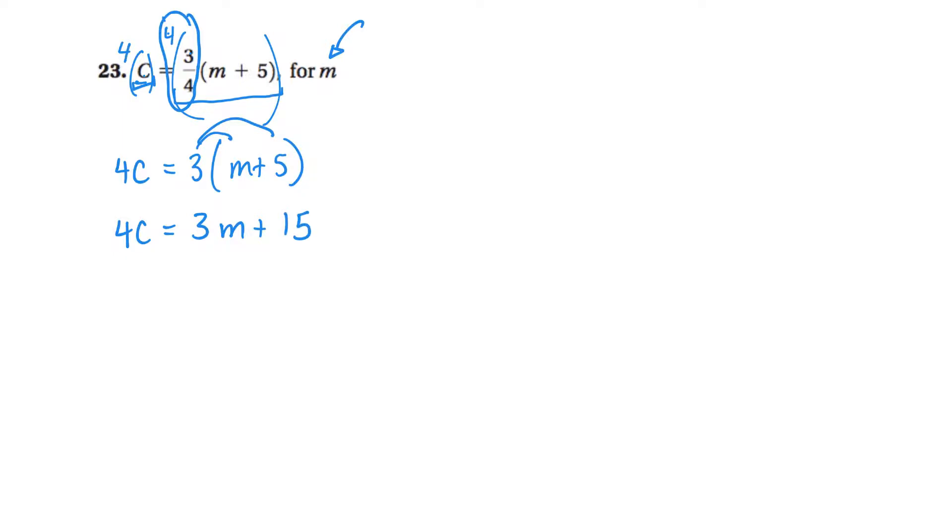Okay, I want to get the m by itself, so let's lose this 15 here. So I'll subtract 15 here. If I do it there, I've got to do it on the left side. Okay, so I'll have 4c minus 15 is equal to 3m. I'm real close.